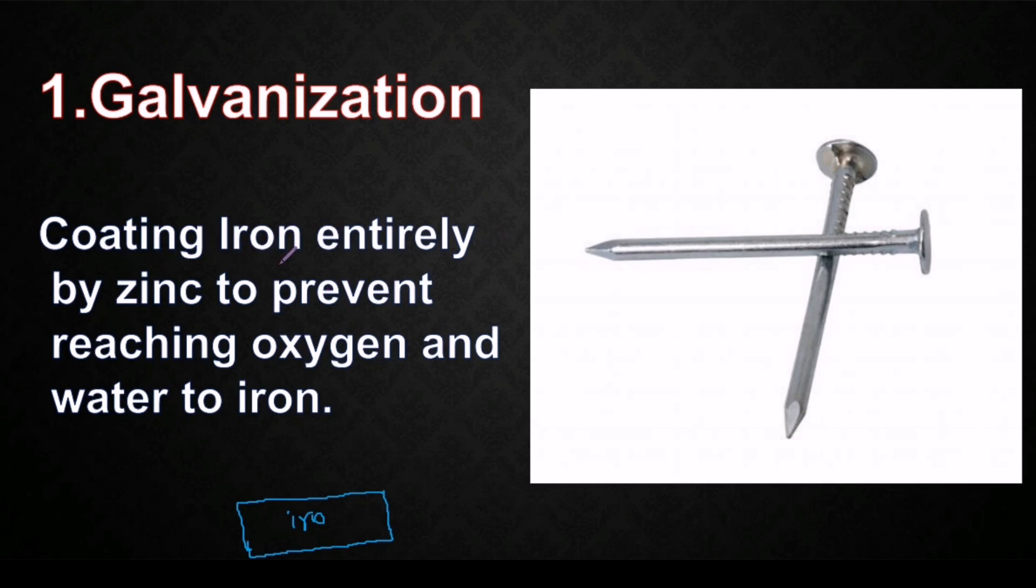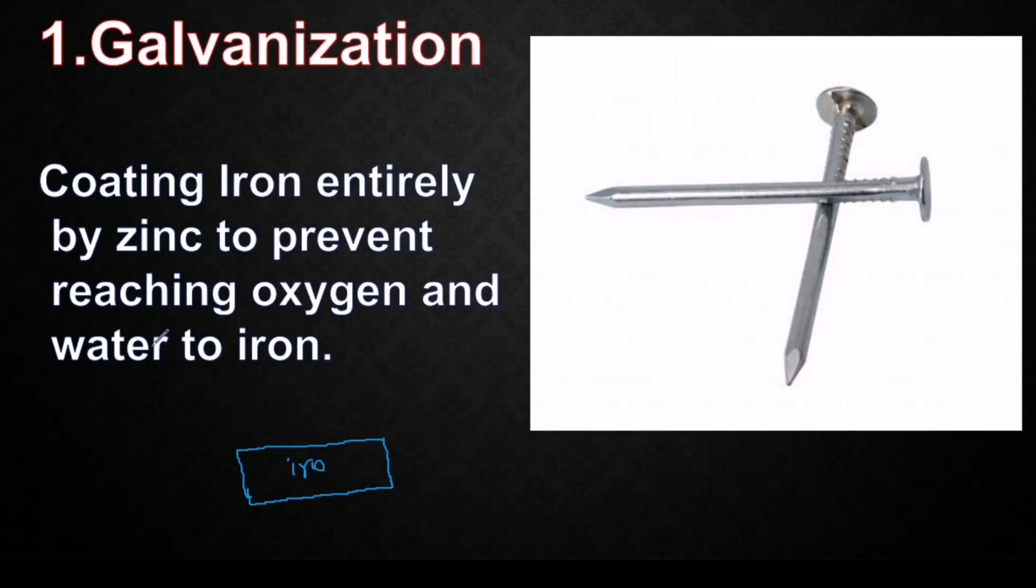Galvanization is coating iron entirely by zinc to prevent reaching oxygen and water to iron, because oxygen and water are the reasons for iron rust. So if we have this piece of iron, so we can coat the iron with a layer of zinc, and this coating actually, this is entire coating as you see. So now H2O and oxygen they can't reach to the iron. So this is a complete protection from all directions for the iron by coating. This method is called galvanization, and these are iron nails as you see, they are coated totally with zinc.